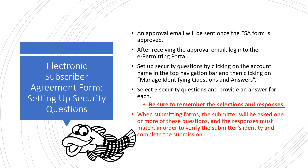An approval email will be sent once the ESA form is approved. After receiving the approval email, log into the e-Permitting Portal. Set up security questions by clicking on the Account Name in the top navigation bar, and then clicking on Manage Identifying Questions and Answers. Select five security questions and provide an answer for each. Be sure to remember the selections and responses. When submitting forms, the submitter will be asked one or more of these questions, and the responses must match in order to verify the submitter's identity and complete the submission.